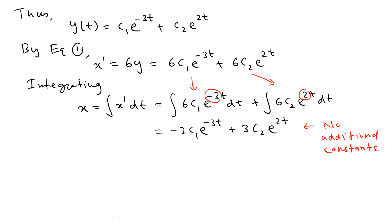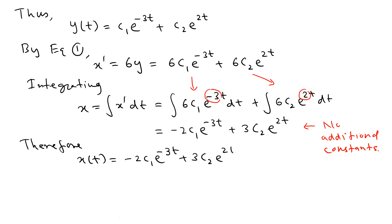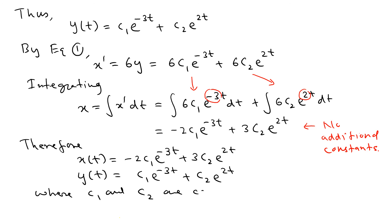Therefore, the complete solution is: x(t) equals negative 2C1 e to the negative 3t plus 3C2 e to the 2t, and y(t) equals C1 e to the negative 3t plus C2 e to the 2t. Here C1 and C2 are arbitrary constants, to be determined by the initial conditions.